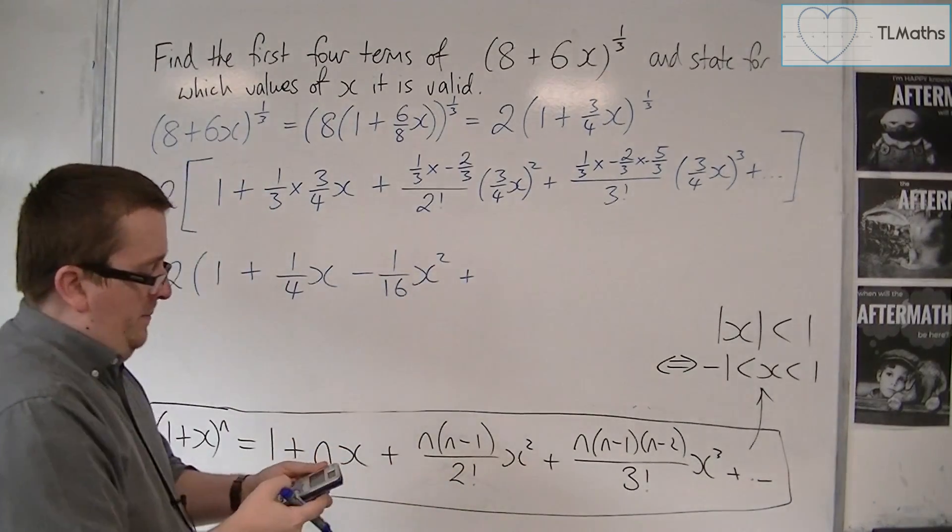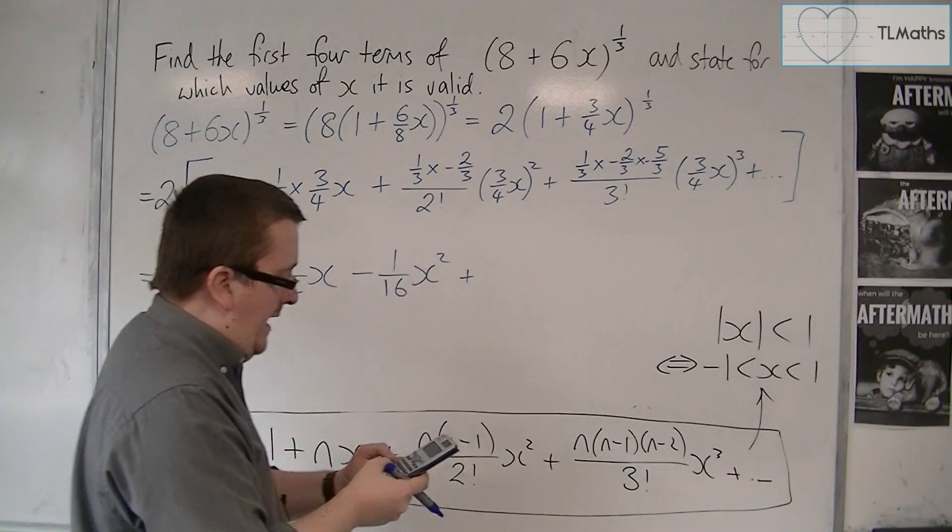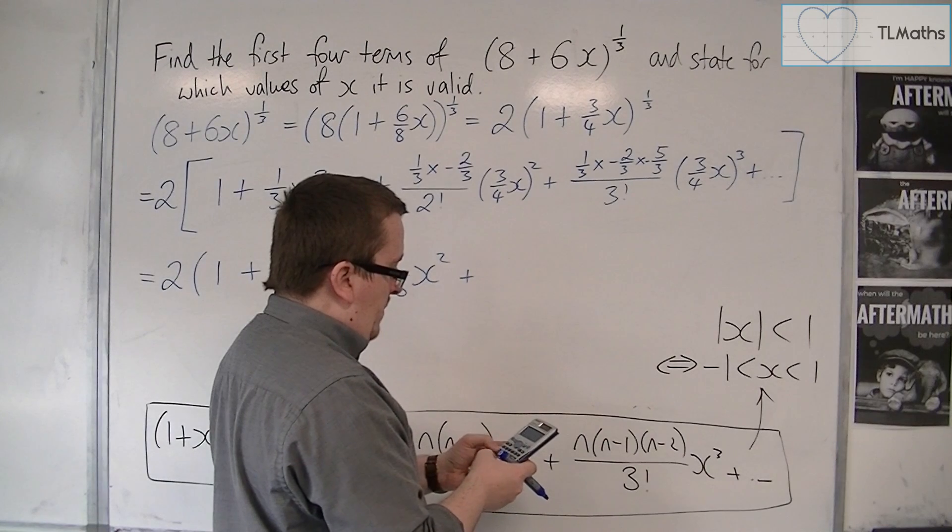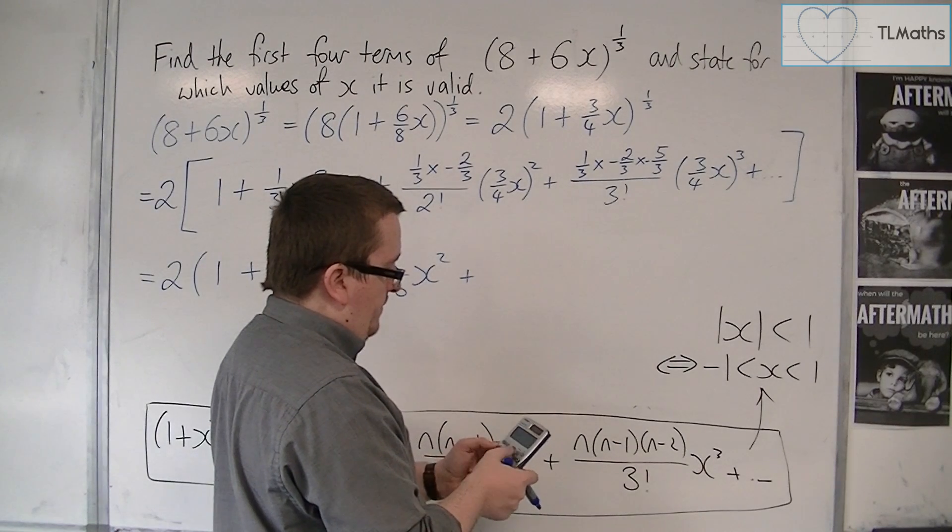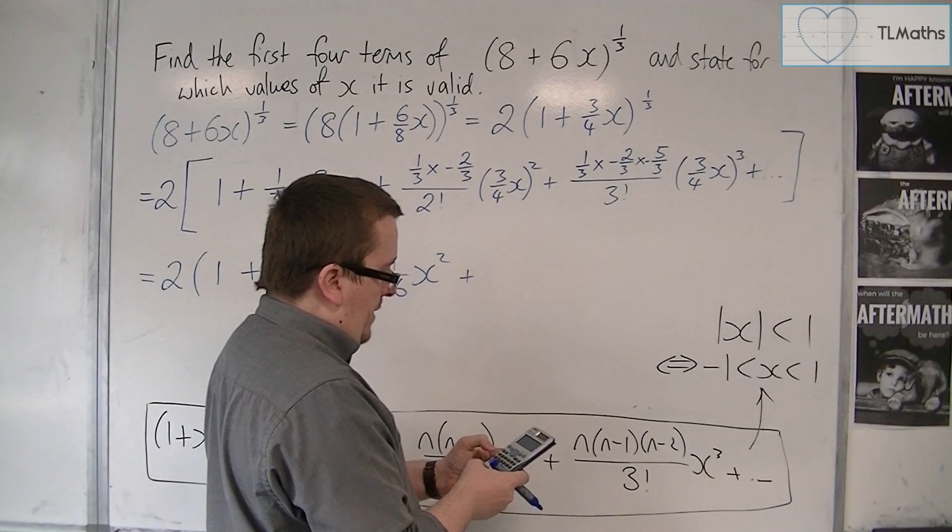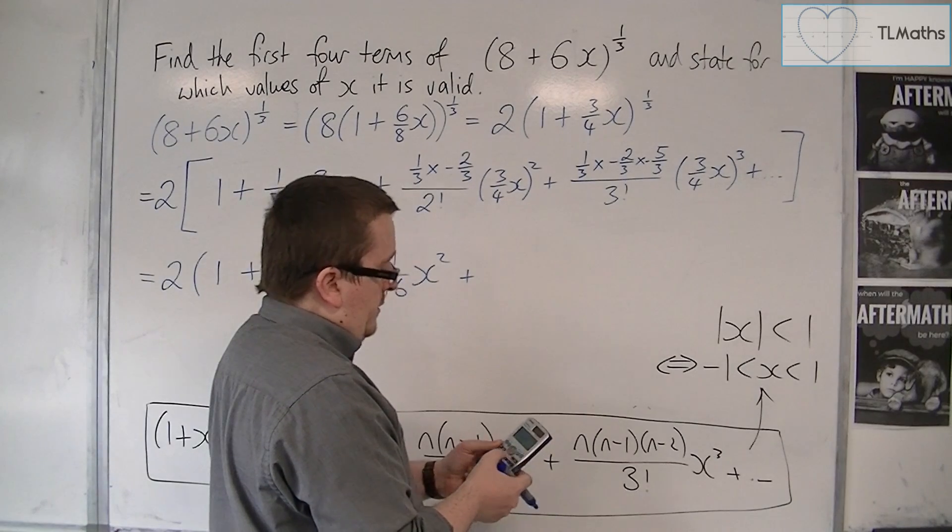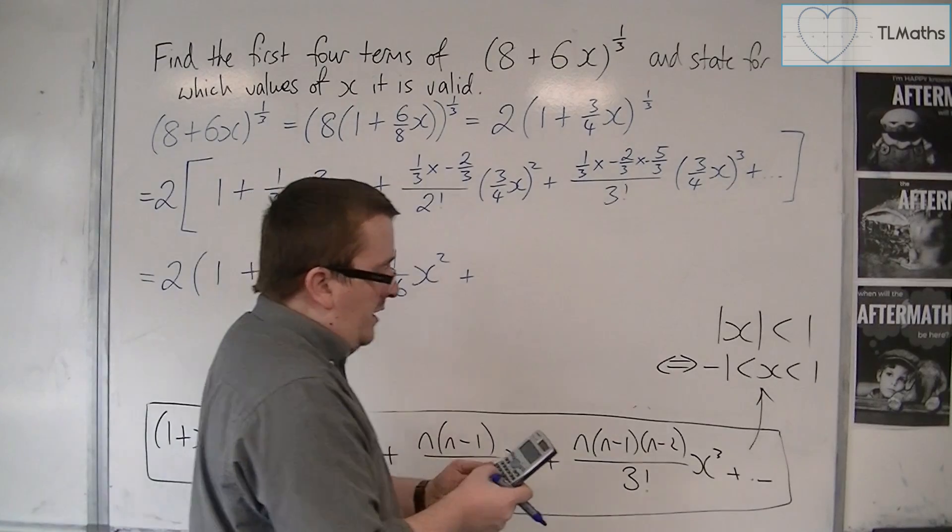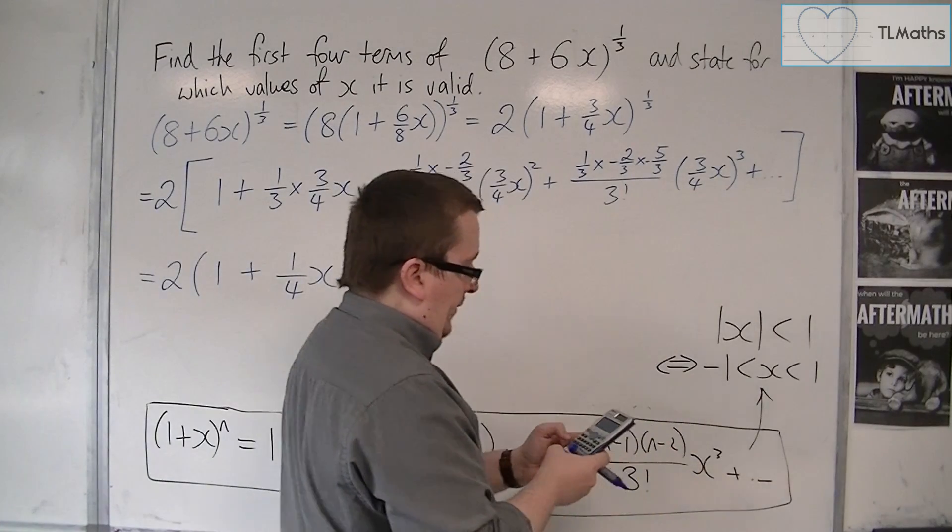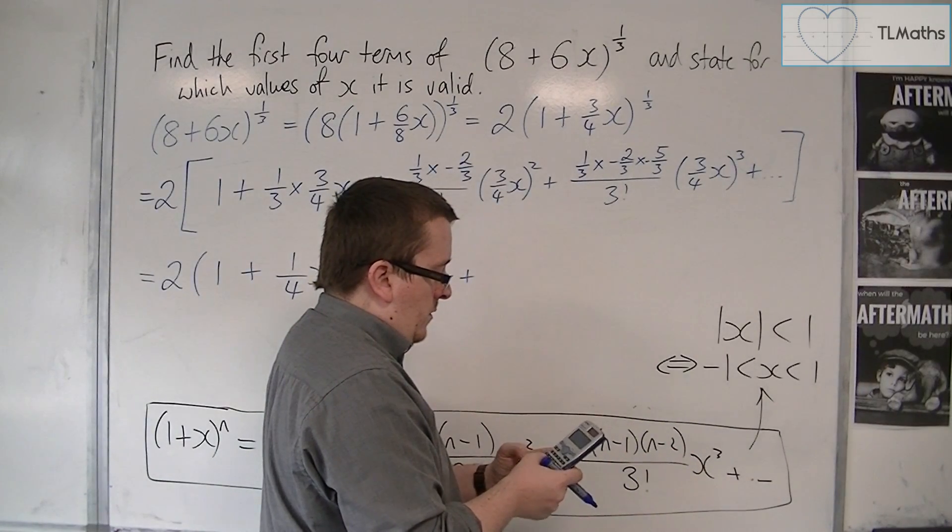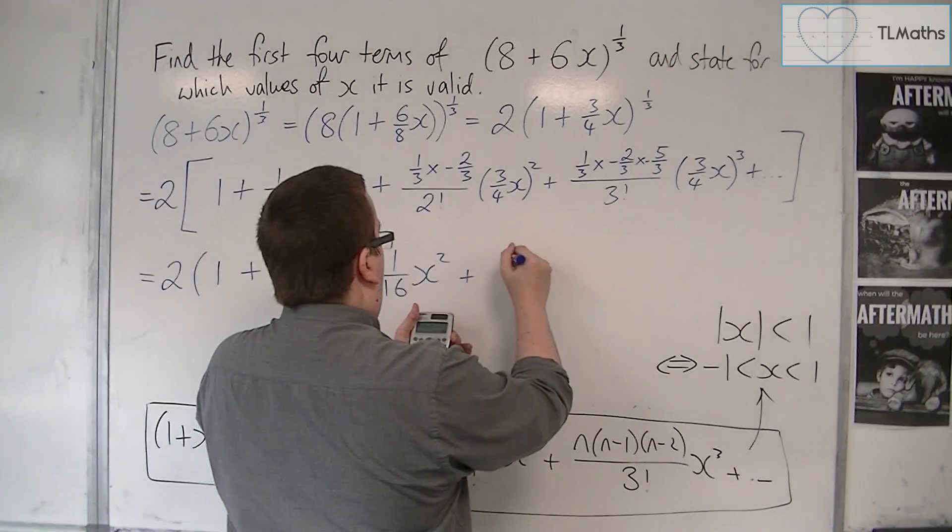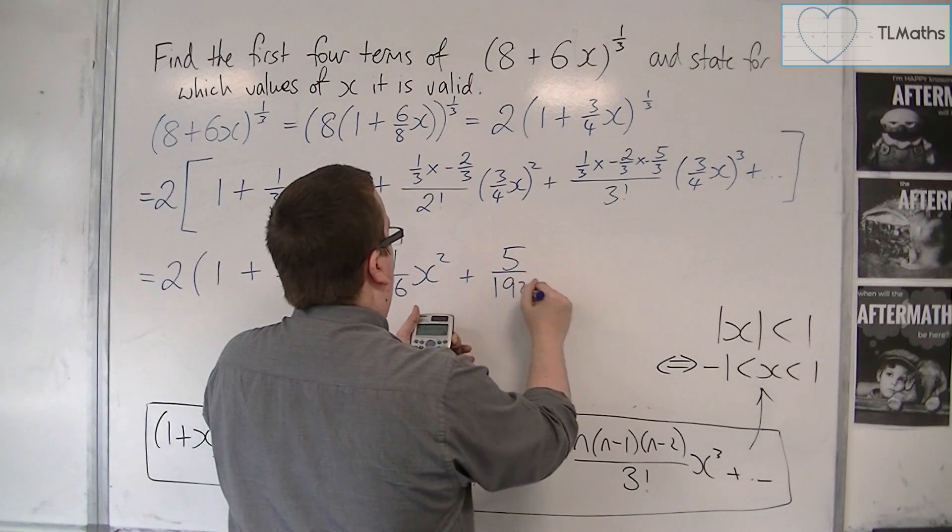Now the next one, we have 1/3 times -2/3 times -5/3 divided by 3 factorial, so 1 times 2 times 3, times (3/4)^3.